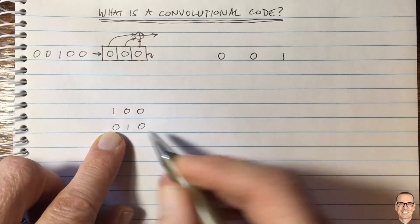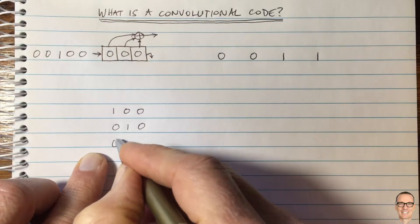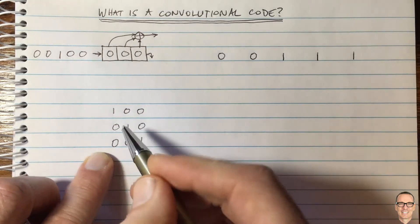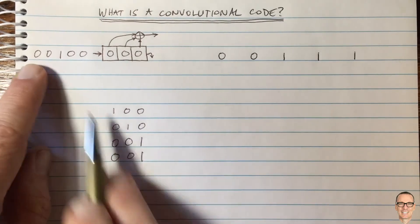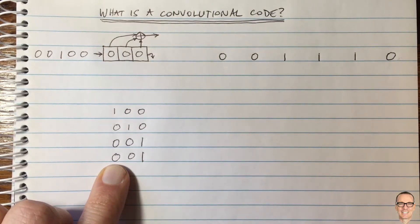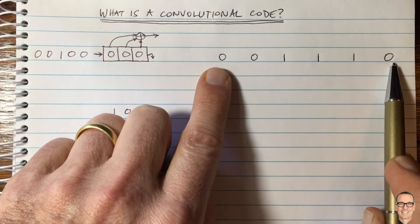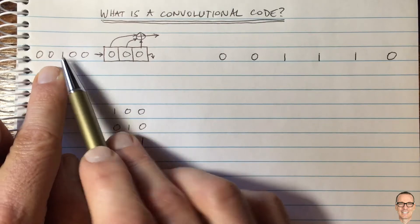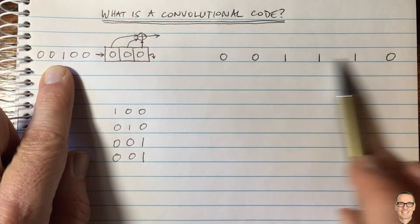The one then shifts along so we have zero, one, zero in the register — the output is another one. It shifts again and we have zero, zero, one — again a one output. After that, zeros fill up again as the zero inputs shift through. So in signals and systems language, we put an impulse in and we get an impulse response. This is a digital system with modulo-two additions, but a single input at one time now appears as outputs at three different times.